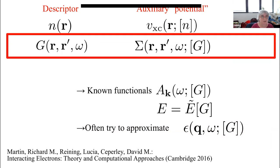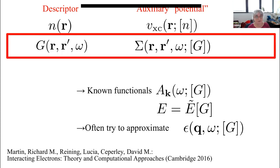If you want to do better, particularly for spectroscopy, you must pay the price of having a slightly more complex descriptor — not as difficult as the full many-body wave function, but a little more. One possibility is Green's functions. The one-body Green's function G(r, r', ω) is more complicated than the density: it depends on two space variables, so we say it is non-local, and it depends on frequency. You still face the problem of how to get the Green's function and how to get your observables.